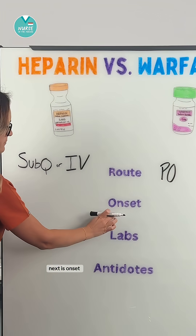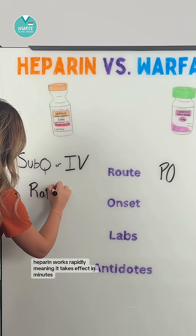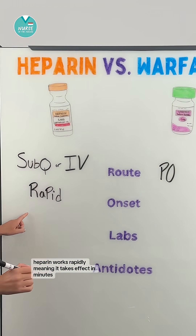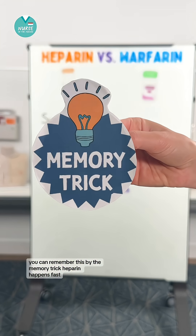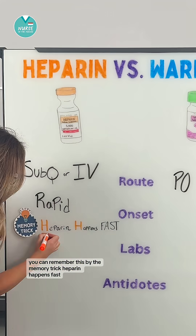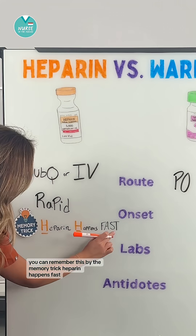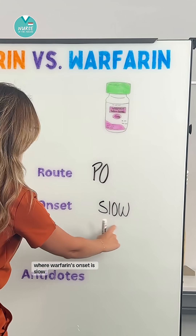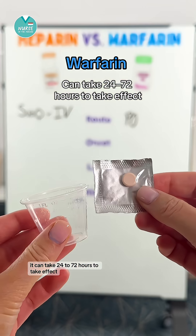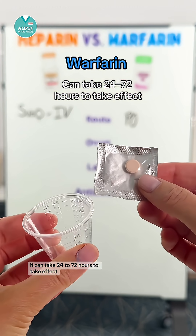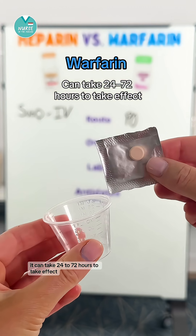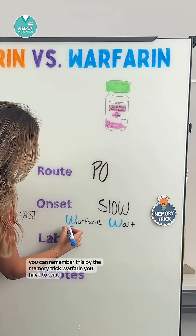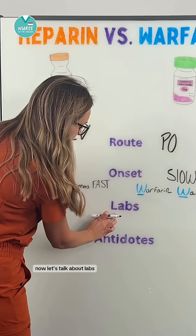Next is onset. Heparin works rapidly, meaning it takes effect in minutes. You can remember this with the memory trick: heparin happens fast. Warfarin's onset is slow — it can take 24 to 72 hours to take effect. You can remember this with the memory trick: warfarin, you have to wait.